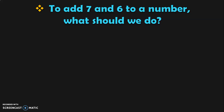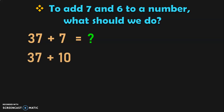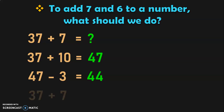Now, how to add 7? We know that 10 minus 3 is 7. Let us use this concept for the mental math calculation. So, 37 plus 7: first, as usual, add 10 to 37. So, 37 plus 10 gives you 47. Now we have to subtract 3 from 47. 47 minus 3 gives you 44. So, the answer for 37 plus 7 is equal to 44.